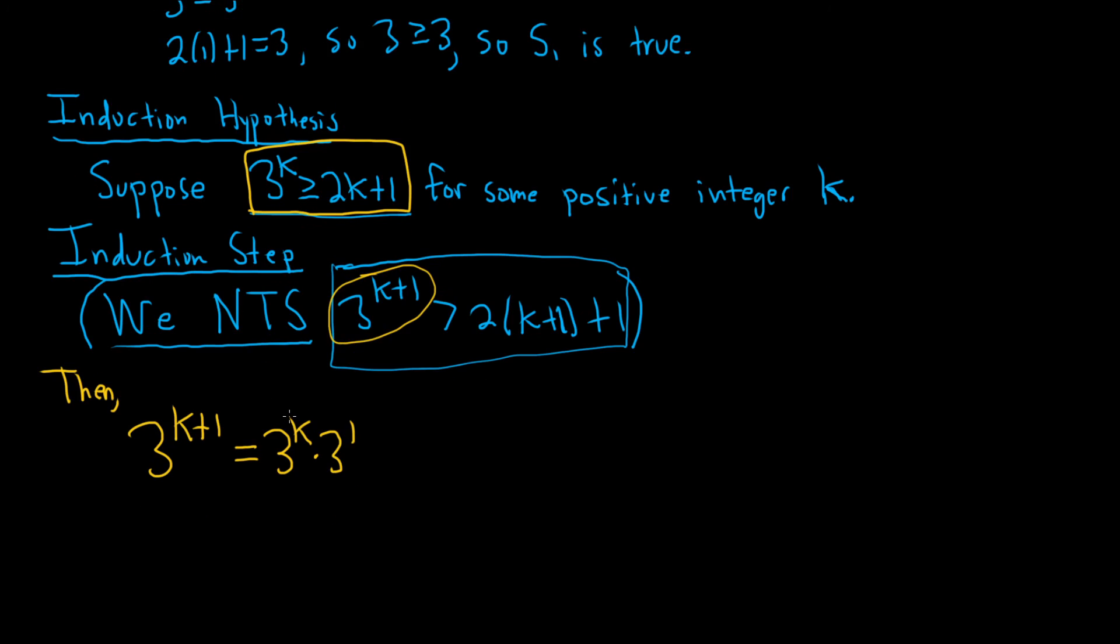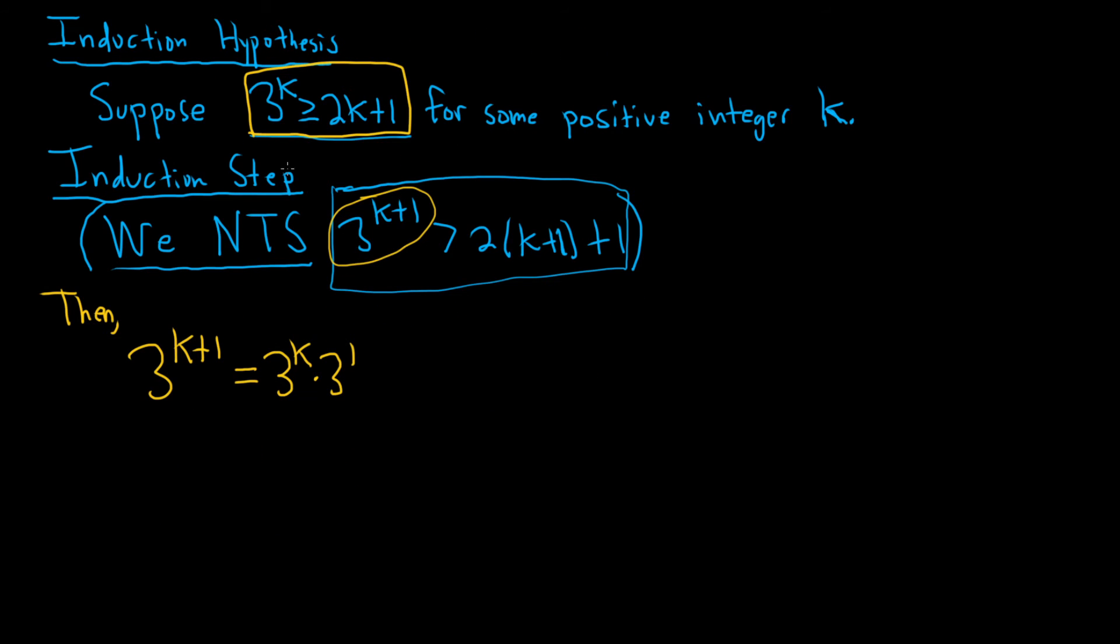So now we can use our induction hypothesis. So what you do is you just insert the greater than or equal to symbol. Because 3 to the k is greater than or equal to. And now you replace it with 2k plus 1. 2k plus 1 times 3. 3 to the k is greater than or equal to 2k plus 1. The 3 kind of just hangs out. So everything is okay.